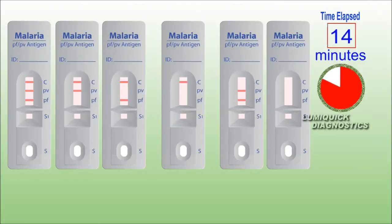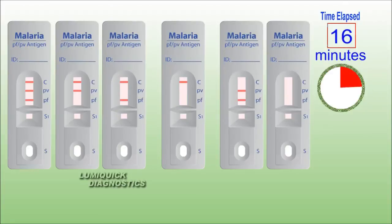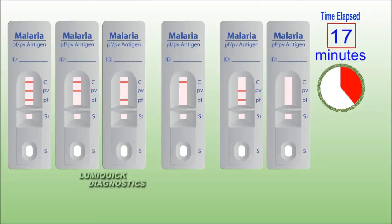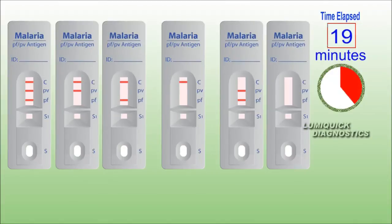At present, malaria is diagnosed by looking for the parasites in a drop of blood. Blood is put onto a microscope slide and stained so that the parasites will be visible under a microscope. But now, a rapid test assay was developed by LumiQuick Diagnostics to easily detect these malaria antigens.